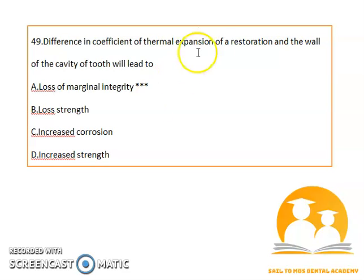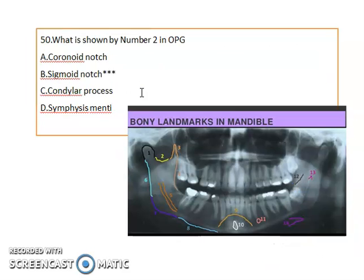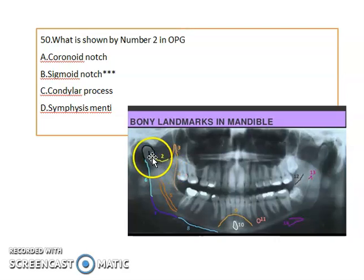If there is a difference in the coefficient of thermal expansion between a restoration and the wall of the cavity of two, it will lead to loss of marginal integrity.